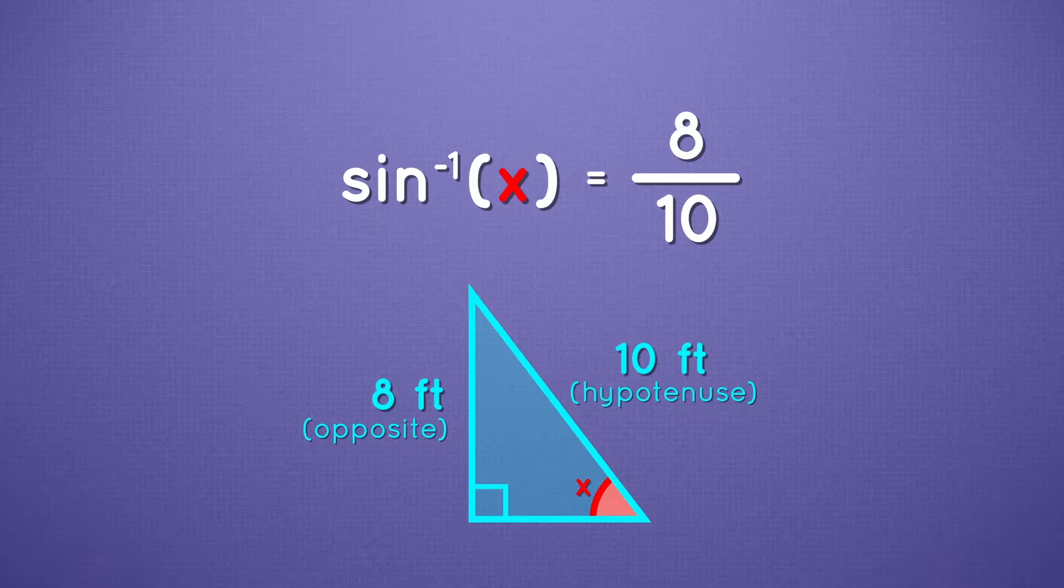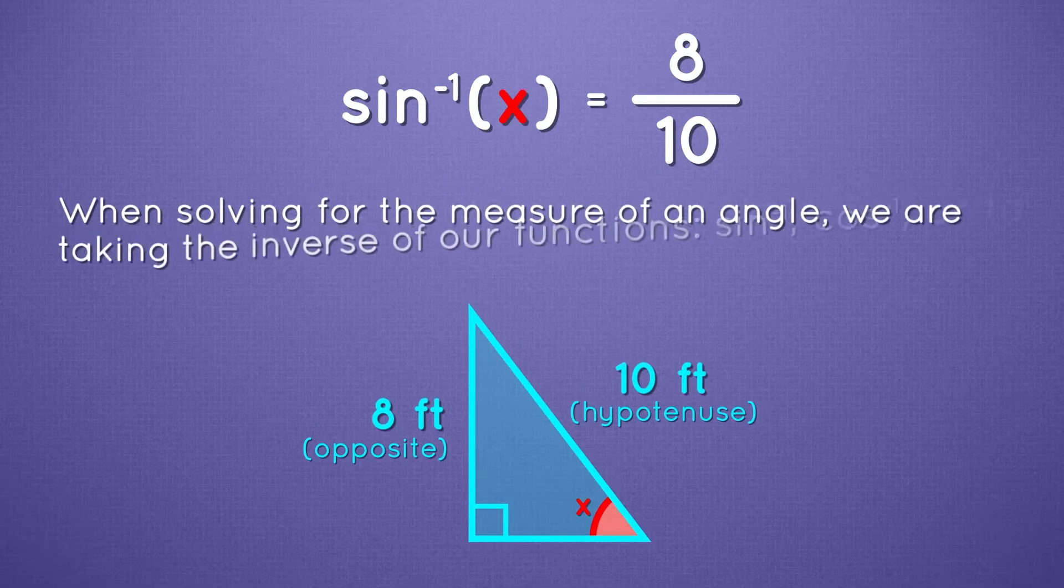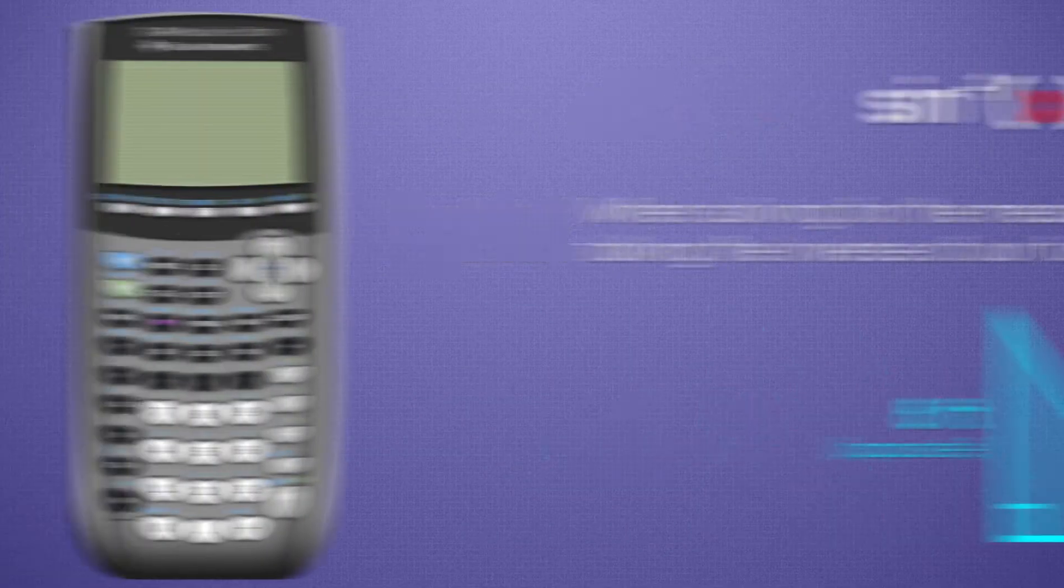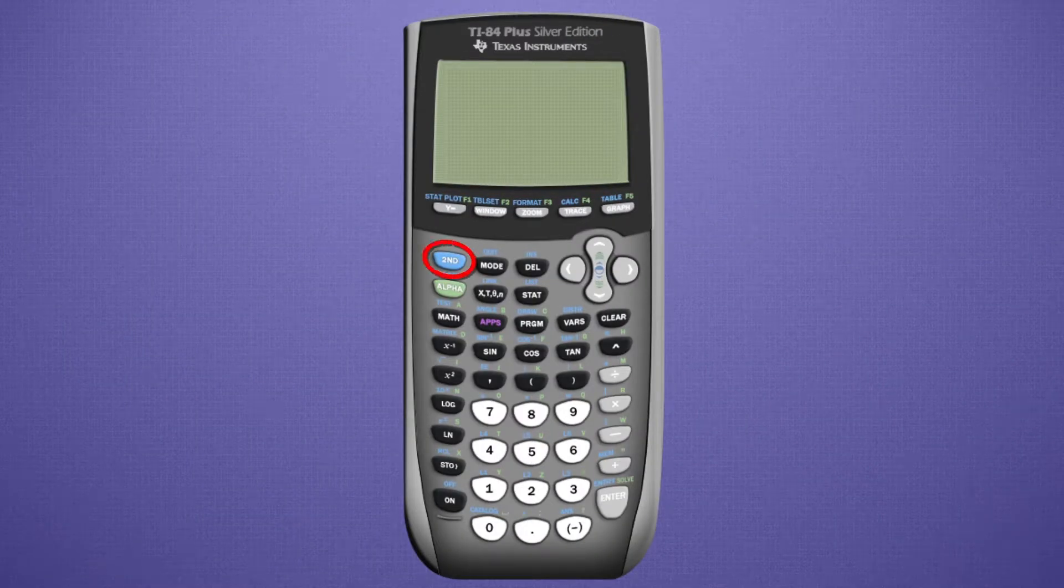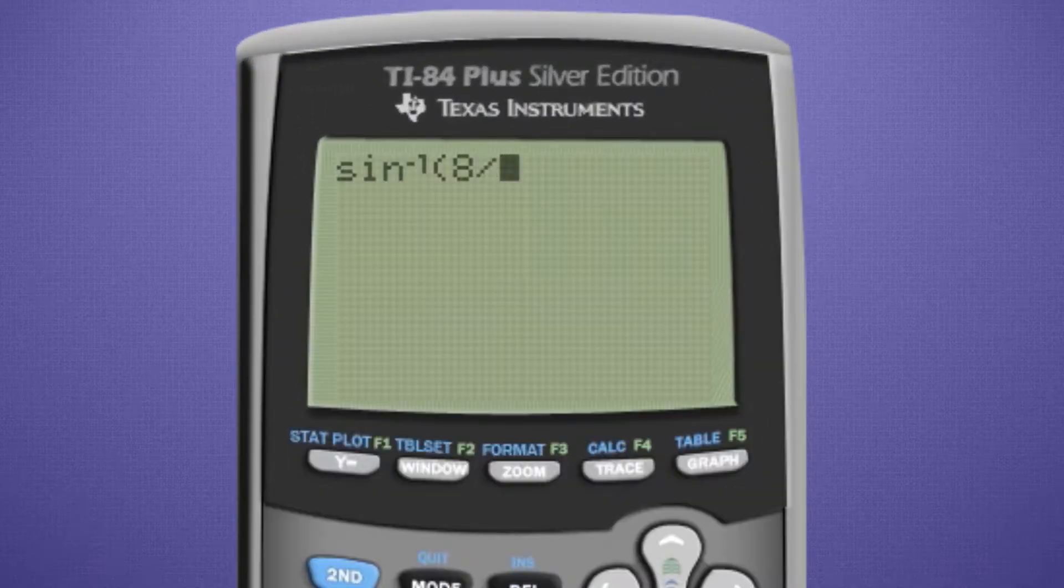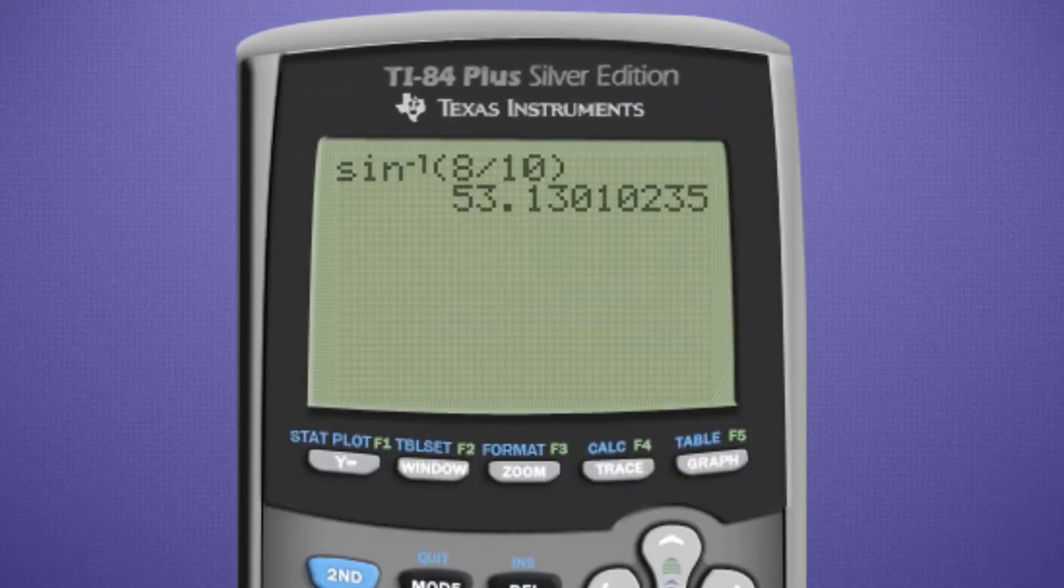So sine of x is equal to 8 over 10. When we are solving for the measure of an angle, we are really taking the inverse of our function. So on your calculator, press the second button. Then hit the sine button to bring up the inverse of sine. Then enter the lengths. Inverse sine of 8 over 10 equals 53.13 degrees. That's it.